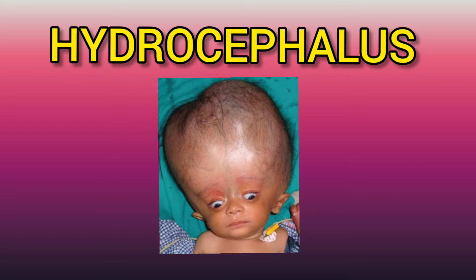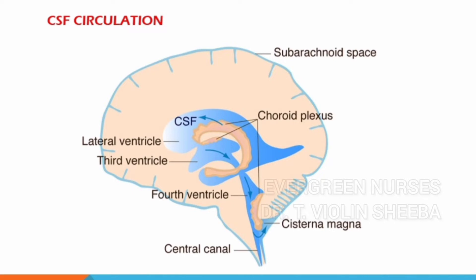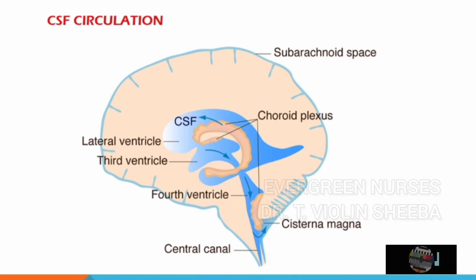Hydrocephalus occurs because of increased cerebrospinal fluid accumulation. The cerebrospinal fluid is a colourless fluid secreted in the ependymal cells of the choroid plexuses, and it circulates in the brain and spinal cord. Let us see the CSF circulation in detail. The CSF is formed in the choroid plexuses. From the choroid plexuses, the CSF reaches the lateral ventricle, then the third ventricle and the fourth ventricle.